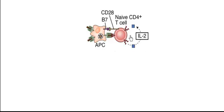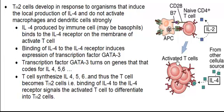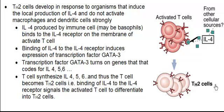Now looking at the other pathway: naive T cells bind to the antigen presenting cell and become activated. Those activated T cells then bind to interleukin 4 produced by other cells such as basophils. Basophils produce interleukin 4, and that interleukin 4 goes and binds to the receptor on the activated T cell, causing them to become T helper 2 cells.